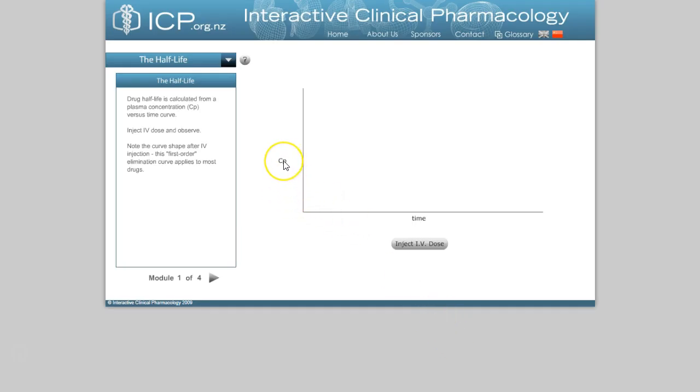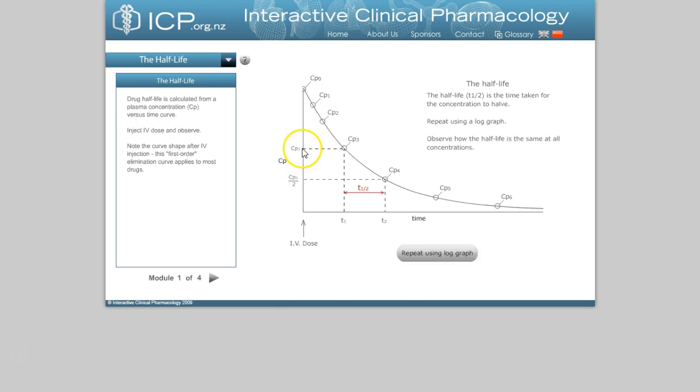Here we're looking at the concentration of drug in the plasma as a function of time. And we give an IV dose of a drug, and here we see some nice first-order kinetics. And the half-life says that for it to drop from one concentration to half of that concentration takes a certain amount of time. And that amount of time is called the half-life. And then for it to drop a second time takes another half-life. The half-life is the same at all concentrations when you have first-order elimination.